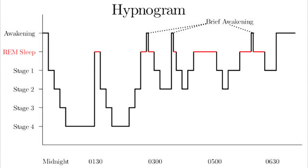Describe the stage awake when the eyes are open. When awake with eyes open, you are alert and there is active mental concentration. The EEG waveform observed is the beta waveform, which has the highest frequency and the lowest amplitude.